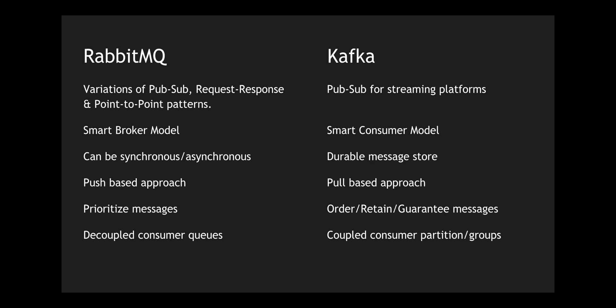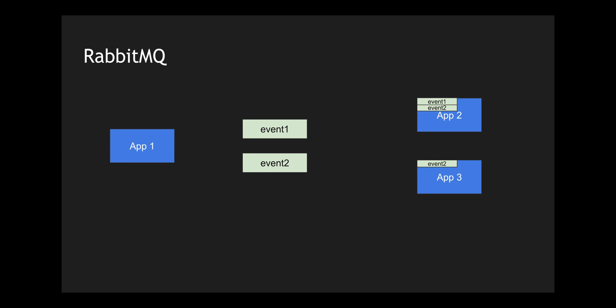Let me explain decoupling versus coupling with a simple diagrammatic flow. I have an application producing some events and two consuming applications — application 2 and application 3. Application 1 publishes two events: event 1 and event 2. Application 2 consumes both event 1 and event 2, but application 3 consumes only event 2. When you want specific events consumed by specific consumers, things become complex. Let me overlay this with a RabbitMQ example.